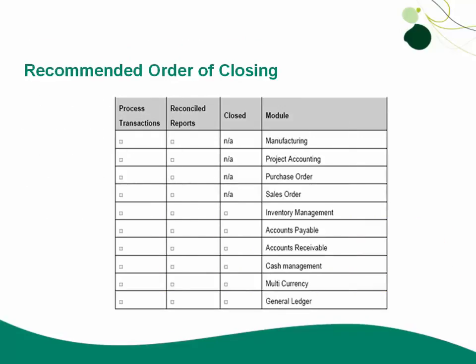This chart shows you the order of closing, and you'd want to start from the top and work down. Some people say to look at the MAS 500 task list and work from the bottom up. In this case, if you have manufacturing, you'll notice that there isn't really a hard close for manufacturing, project accounting, purchase order, or sales order — they close in different ways or with another module. For instance, if you run the period-end close for sales order, it allows you to purge data and print reports.